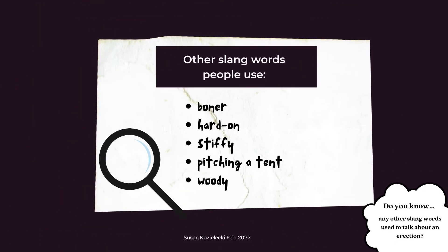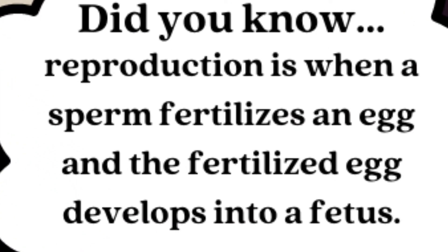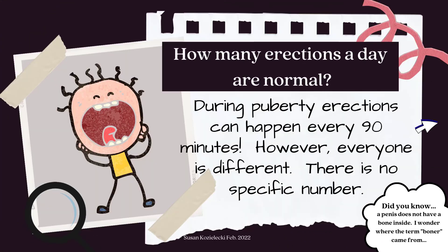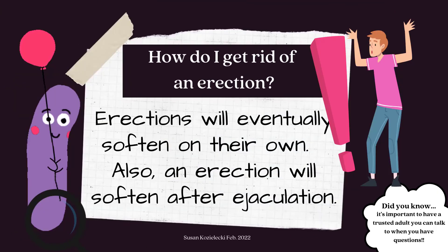Do you know any other slang words used to talk about an erection? If you do, please leave them in the comments below. Why do erections happen? They can be caused by sexy thoughts, but they also happen just because — it's the body's way of getting ready for reproduction. Did you know reproduction is when a sperm fertilizes an egg and the fertilized egg develops into a fetus? During puberty, erections can happen every 90 minutes; however, everyone is different — there is no specific number. Did you know a penis does not have a bone inside? I wonder where the term "boner" came from.